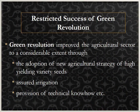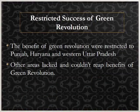The restricted success of the green revolution: The green revolution improved the agriculture sector considerably through the adoption of high yielding variety seeds, assured irrigation, and provision of technical know-how. But the benefits were restricted to Punjab, Haryana, and western Uttar Pradesh, as these states were traditionally wheat-growing states with adequate policy support and irrigation facilities. Other areas lacked these advantages and could not reap the benefits of the green revolution.